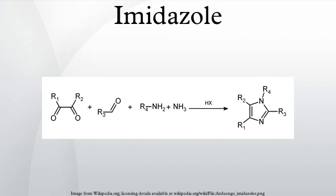Some resonance structures of imidazole are shown below. Imidazole is amphoteric — that is, it can function as both an acid and as a base. As an acid, the pKa of imidazole is 14.5, making it less acidic than carboxylic acids, phenols, and imides, but slightly more acidic than alcohols.